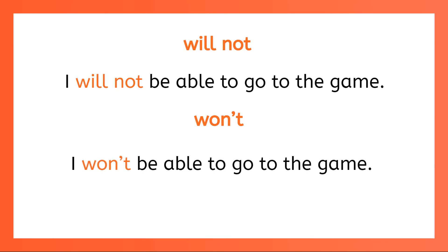There is one contraction that doesn't follow the rules. Look at the words will and not with me, as in I will not go to the game. The contraction for will not is actually won't. We say and write, I won't be able to go to the game.